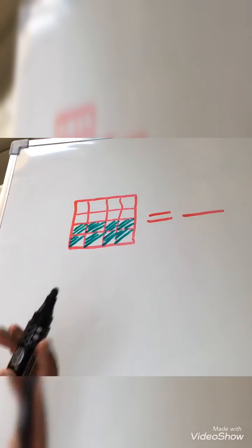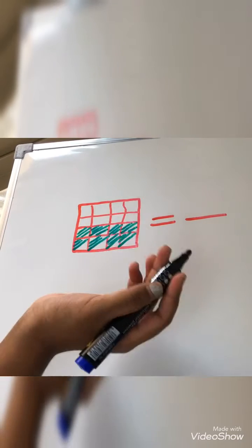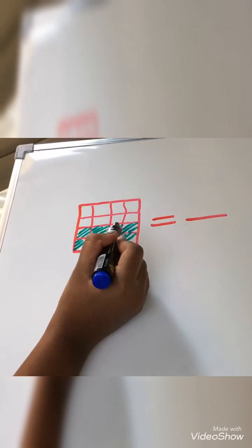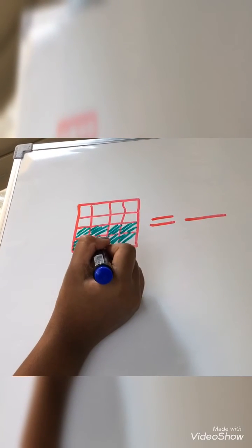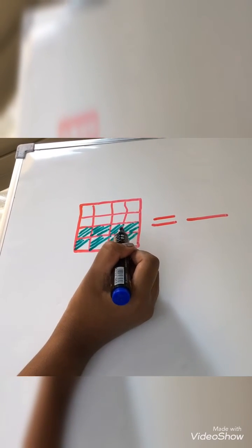Now let's find the numerator. The numerator is the shaded part. So 1, 2, 3, 4, 5, 6, 7, 8. Eight is the numerator.